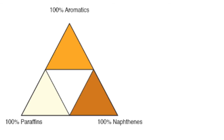Ternary diagrams can be very useful tools for classifying crude oils. Here you see a ternary diagram — a triangle — where on the corners of the triangle we can see pure hydrocarbons.